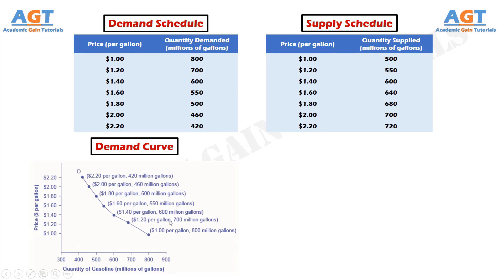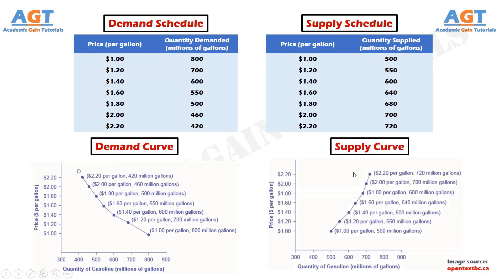Demand Curves will appear somewhat different for each product — they may appear relatively steep or flat, or they may be straight or curved. Nearly all Demand Curves share the fundamental similarity that they slope down from left to right. Similarly, the Supply Curve is a line that shows the relationship between price and quantity supplied on a graph, with quantity supplied on the horizontal axis and price on the vertical axis.